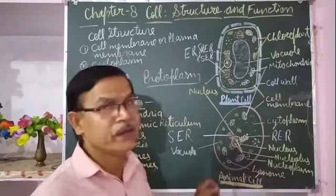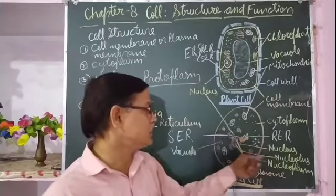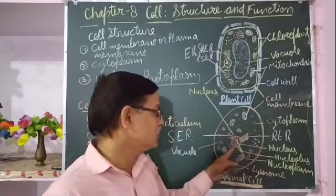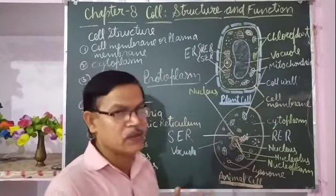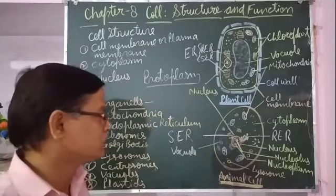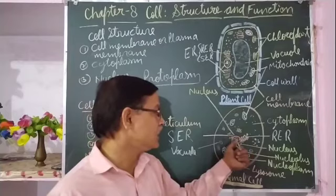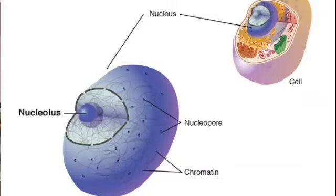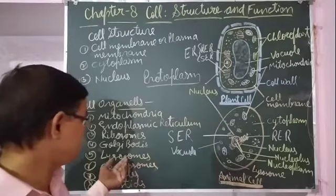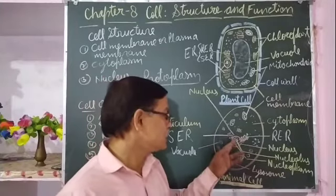Whatever membrane is found over the nucleus is called nuclear membrane, just as the cell covering is called cell membrane. Inside the nuclear membrane, whatever substance is filled is called nucleoplasm. Inside the nucleus, a dense spherical part is there that is called nucleolus. The nucleolus has RNAs that help in the formation of ribosomes, which is a cell organelle we will study about further.